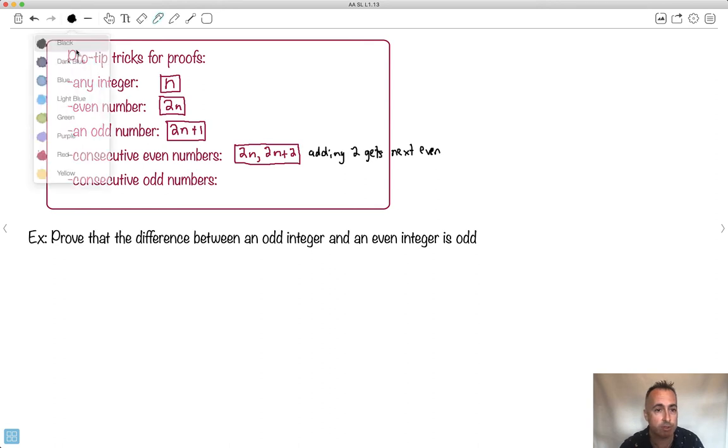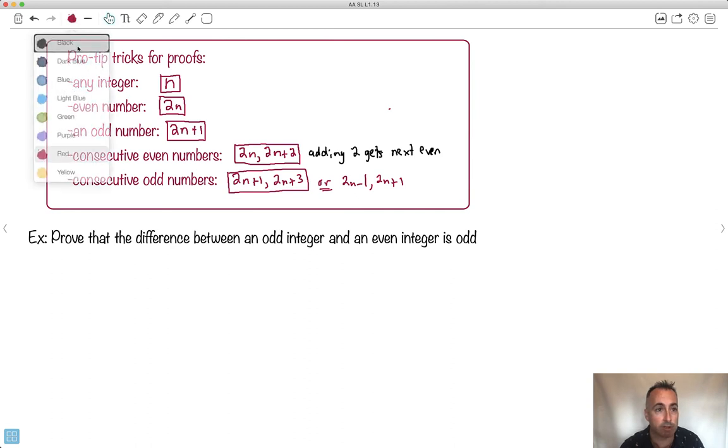Same thing. If you're doing odd numbers, we want consecutive ones. If I have an odd number like 2n plus 1, that's the first odd number. And the next one I have to add 2 to it as well. So 2n plus 3 and so on. Sometimes I've seen it like 2n minus 1 and 2n plus 1. There's a few different ways of doing it. So adding 2 gets you the next odd.